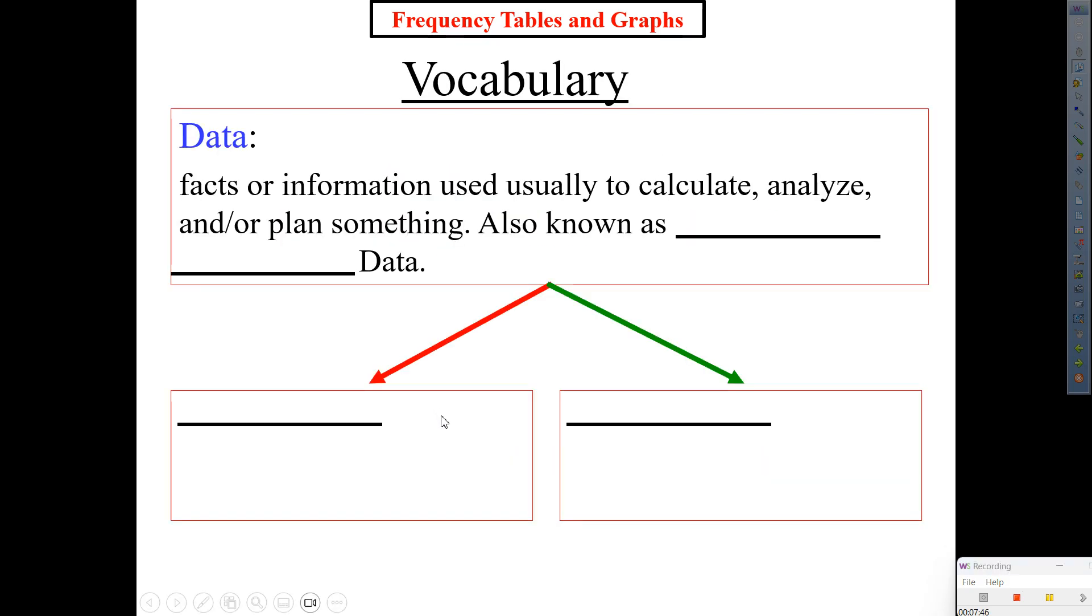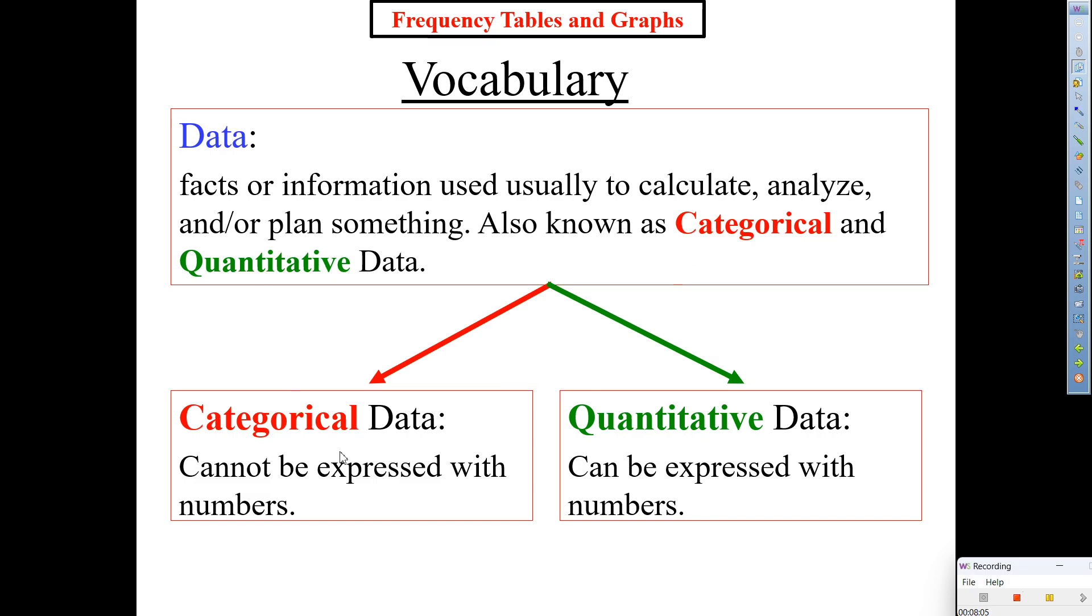We already know the two types of data. Yes? Yes, CQ. All right. Type that in on your screen. The two types of data and what each one represents. Do that really quick. All right. So correct answer is categorical and quantitative. Categorical you cannot express with numbers. Quantitative you can.